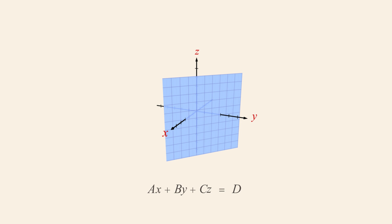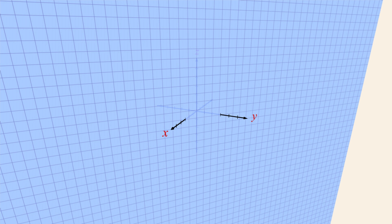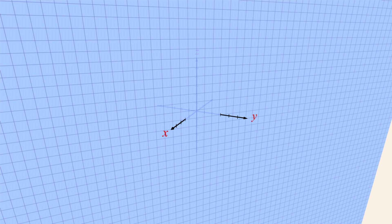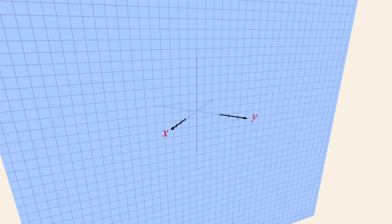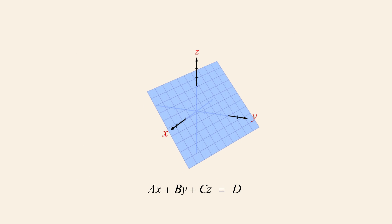The graph of a linear equation in three variables will always be a plane when graphed in Cartesian coordinates, assuming that the constants a, b, and c are not all zero. Any plane which corresponds to the solutions extends infinitely in all directions. Depending upon the values of a, b, c, and d, the plane may lie in any position and orientation.